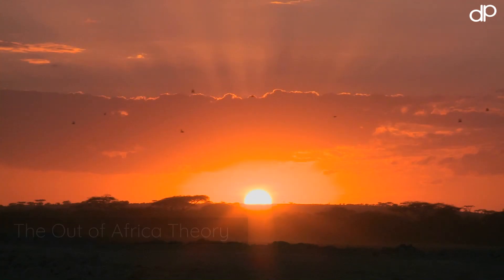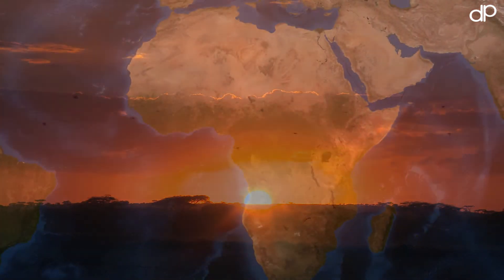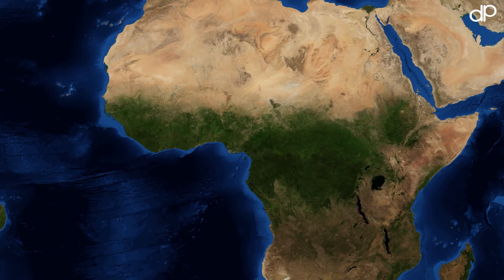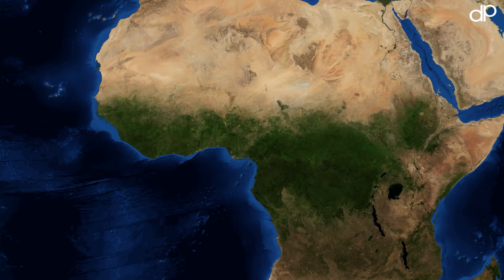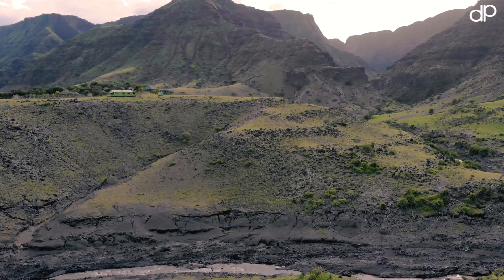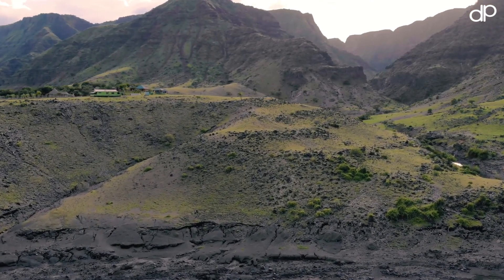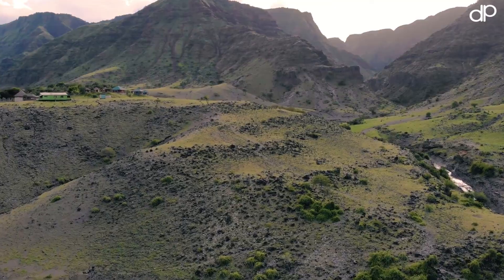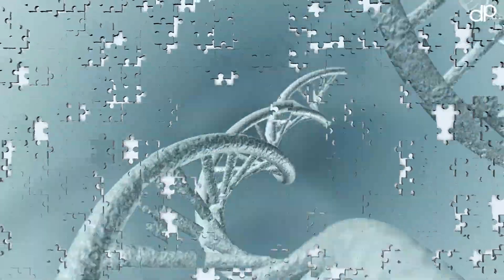The Out of Africa Theory is one of the most widely accepted models of human evolution and origin. It proposes that modern humans originated from Africa and later migrated to other parts of the world. This theory has revolutionized our understanding of human evolution and provided new insights into the diversity of human populations.